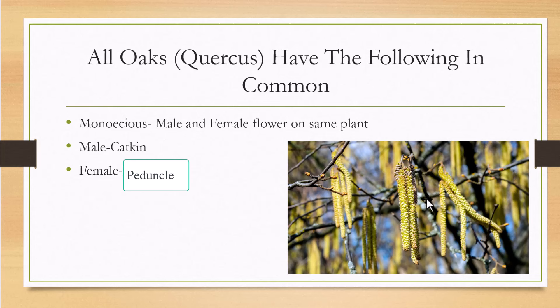All oak trees have catkins. The female flower is called a peduncle — it's very small, almost reddish-colored, and inconspicuous. You'll see catkins hanging down in the spring. On each individual oak tree, the catkins produce pollen at a different time than the female flower becomes receptive, which prevents self-pollination. On some trees the female becomes receptive first, then the catkins release pollen; on others it's vice versa.